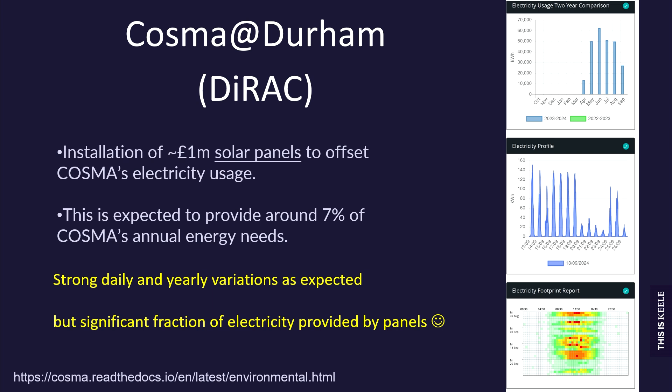Moving on to Durham — Alastair kindly provided information about solar panels being installed in the north. Even in the north of England you can produce solar power, with a £1 million investment through UKRI funding. In summer it covers roughly 100% of consumption, but in winter almost nothing. Overall it produces about 7% of the energy consumption. There are strong daily and yearly variations, but you can do quite a lot as long as you're not required to power the system directly — it's a good offset.